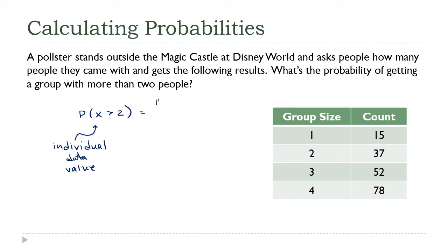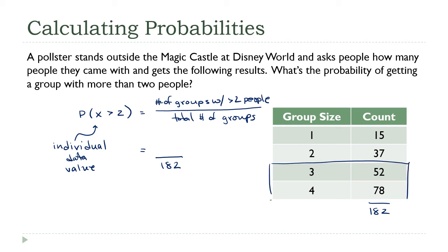Let's apply our formula again. This is the number of groups with more than two people divided by the total number of groups. The denominator hasn't changed, although I forgot what it was. 10, 17, 22, 6, 11, 18, that's 182. And the numerator, how many groups with more than two people were there? Now I'm talking about two groups, three and four, those both fit that description. So my numerator here will be the sum of these two. 52 plus 78 is 130.